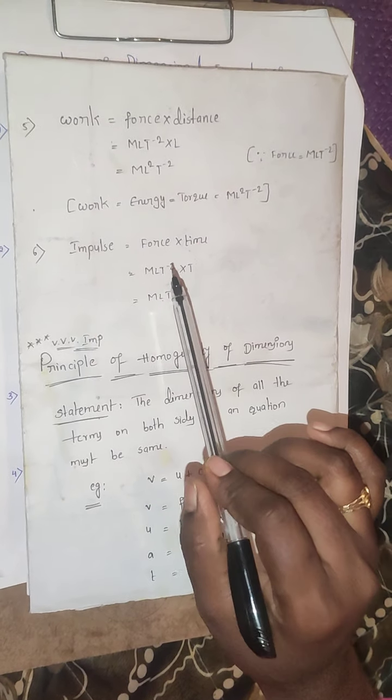Impulse general formula is force into time. Force dimensional formula is M, L, T to the power of minus 2. Multiplied by T, so the dimensional formula of impulse is M, L, T to the power of minus 1 — that is MLT⁻¹.